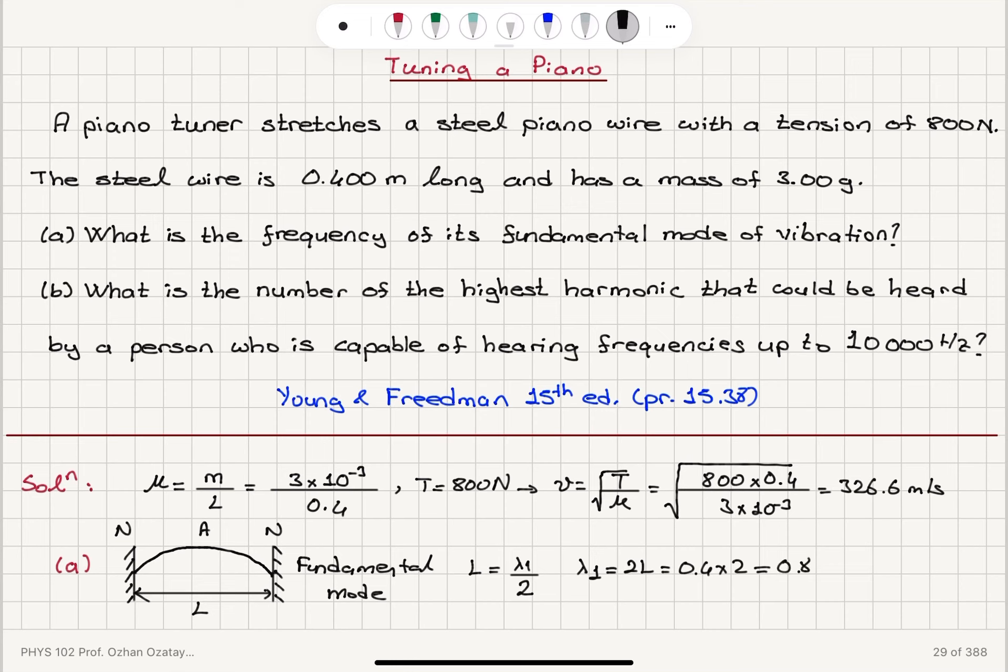The wavelength multiplied by the frequency, lambda 1 times F1, is the propagation speed V. So F1 would be equal to 1 over lambda 1 times V.